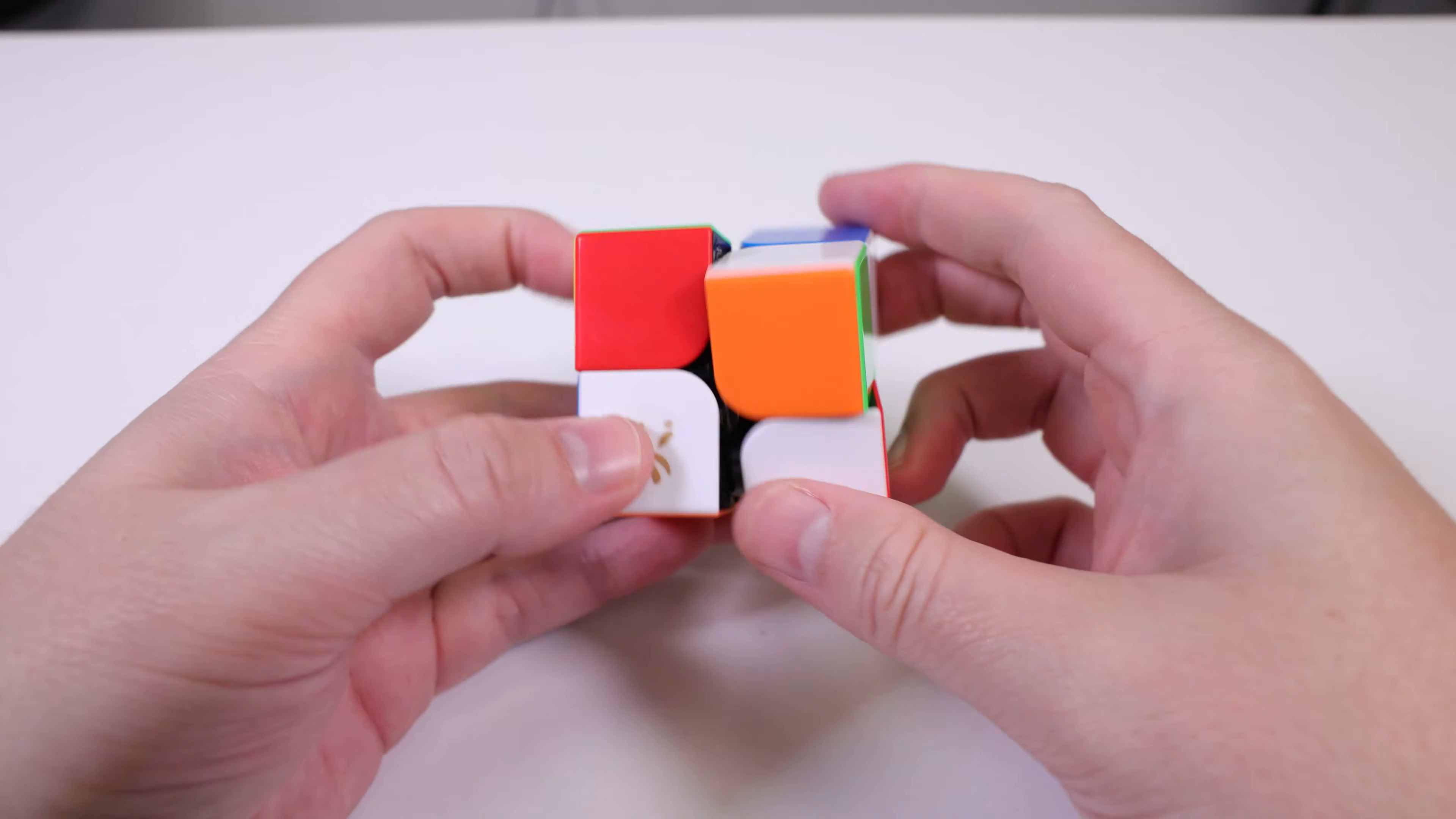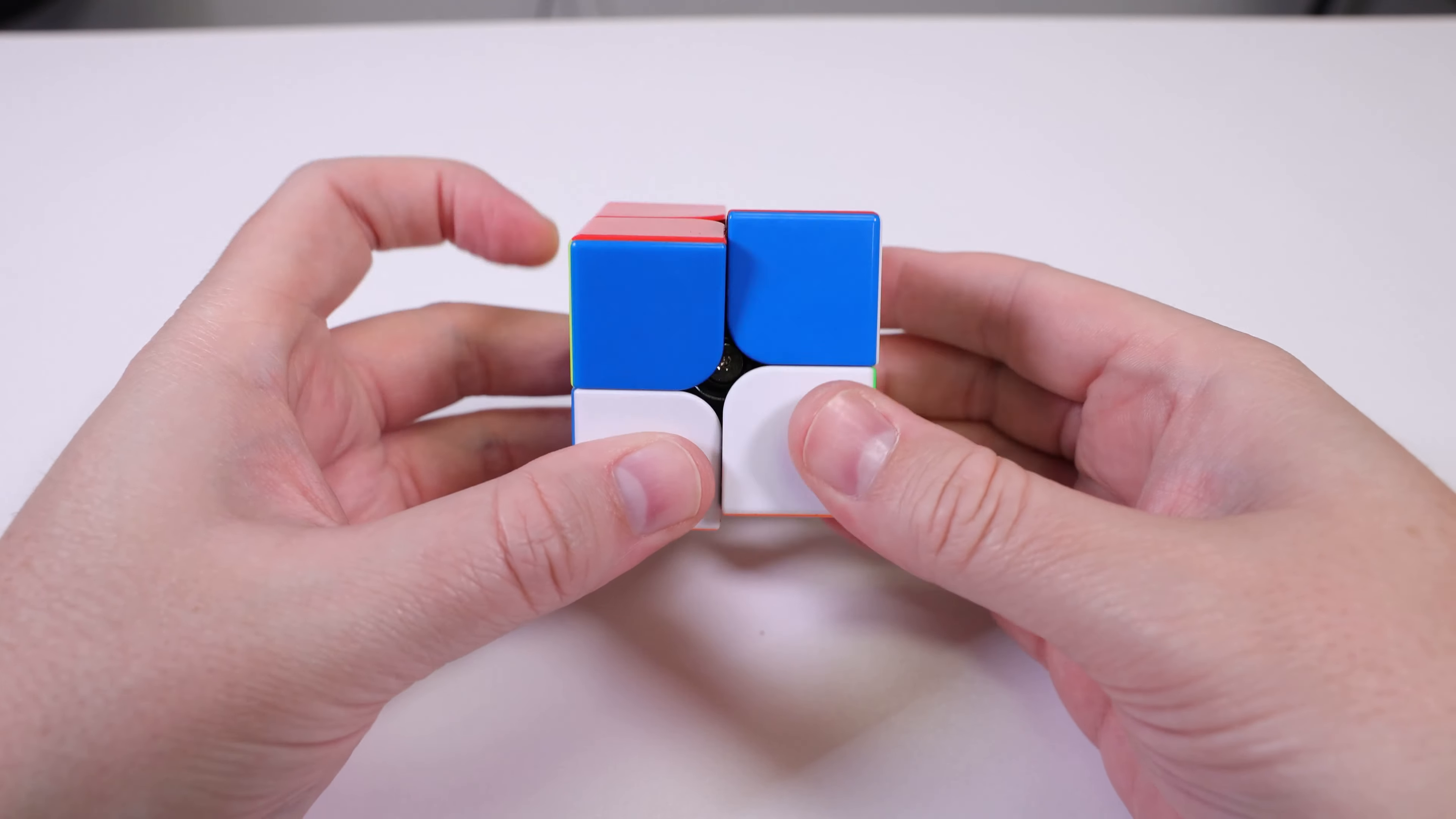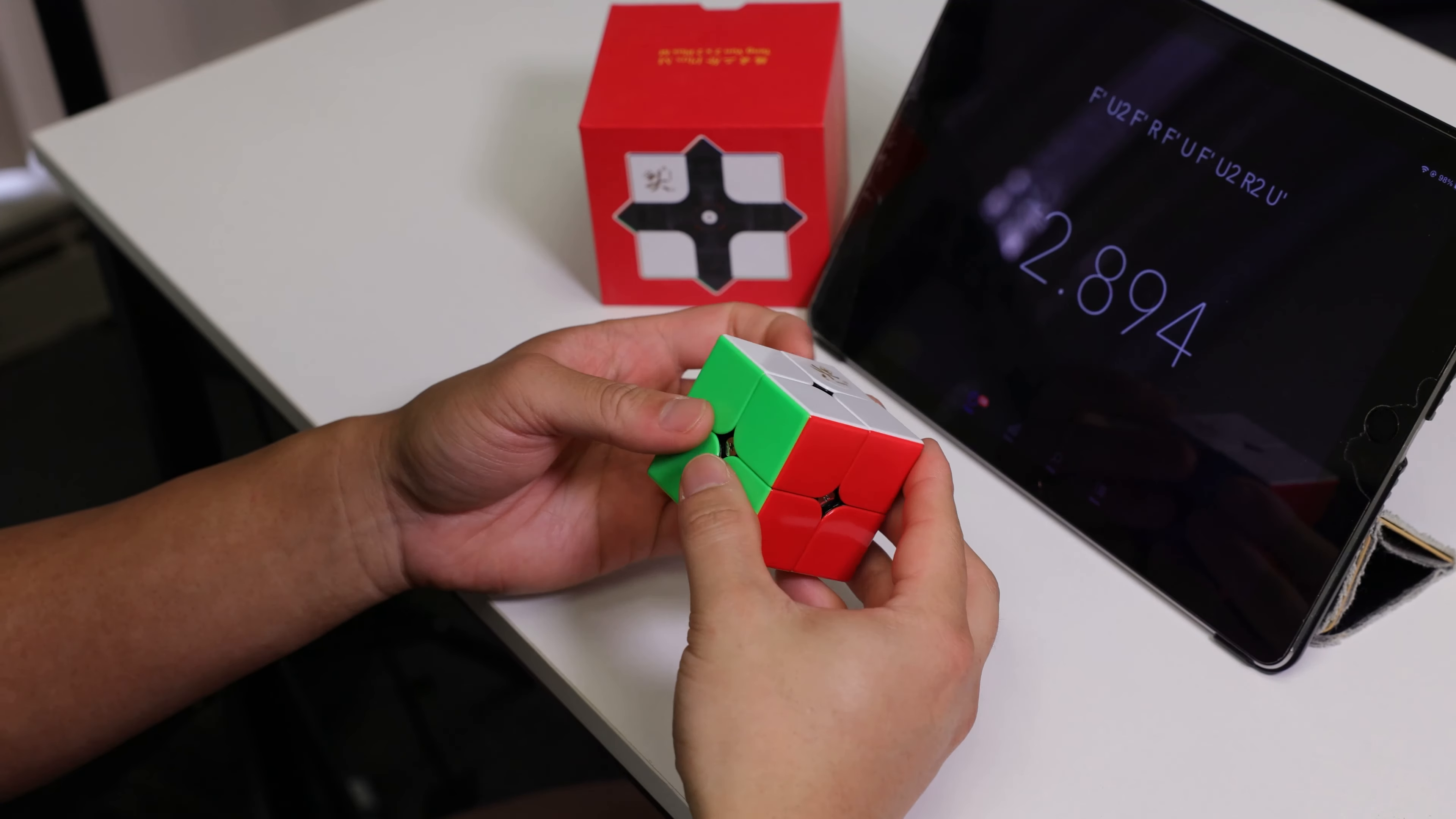Making a turn on this cube results in a smooth and tactile feel. On settings 1 and 2, the magnetic bump is very apparent. Overall, I think this is quite a solid release from DaYan. I'm really curious how this cube will perform in the hands of competitive 2x2 solvers.